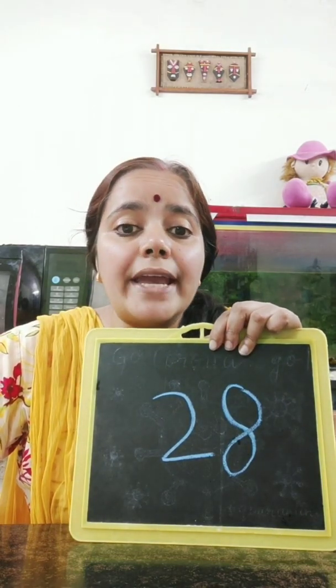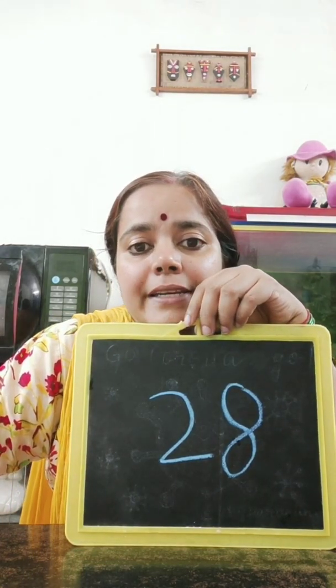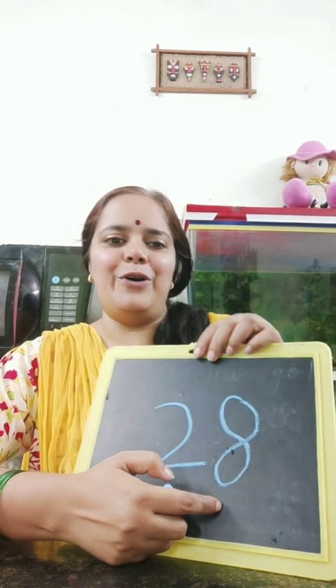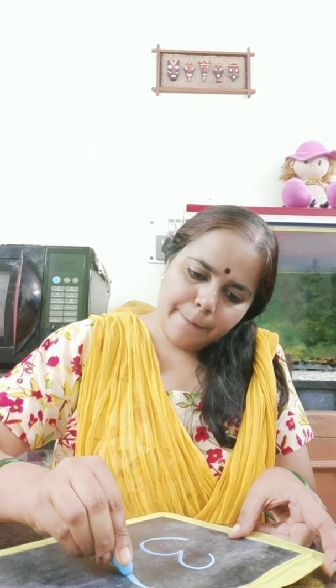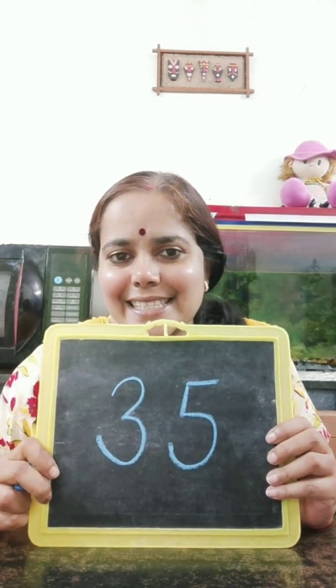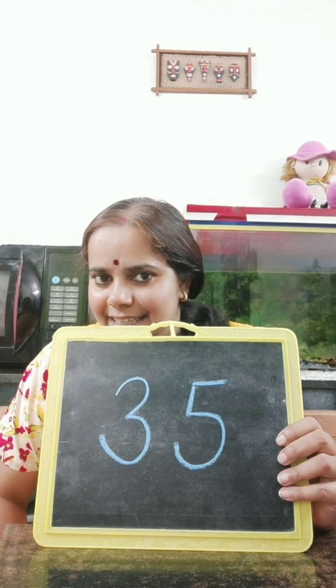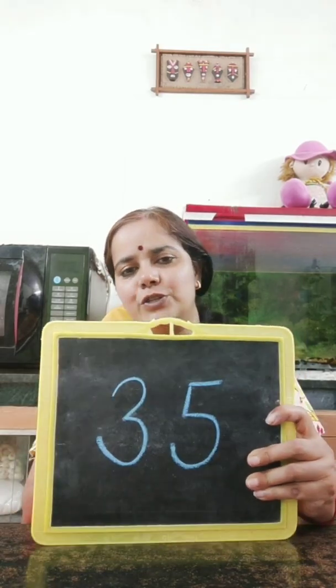This is 28. How many 10s? 2 tens. How many 1s? 8 ones. Oh God, you all are so clever. One more number ma'am is going to write. This time ma'am will write a new number, and this number is 35. How many 10s are there? 3 tens. And how many 1s? 5 ones. Very good, children. You all are so clever.